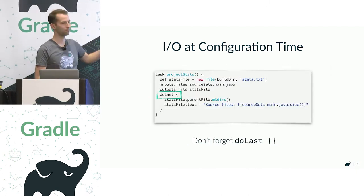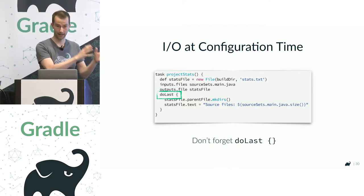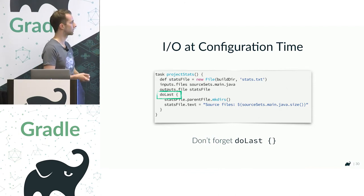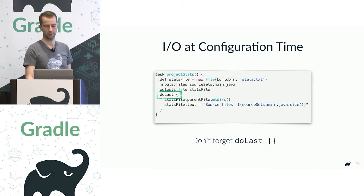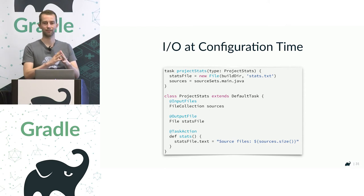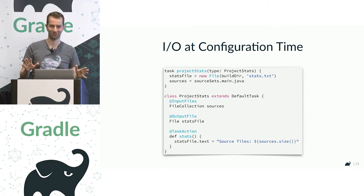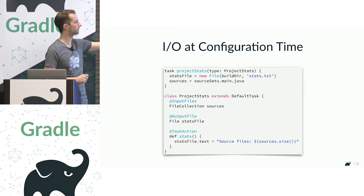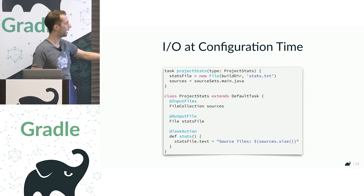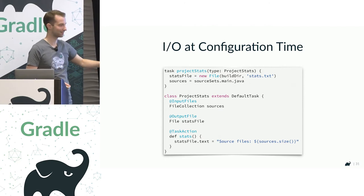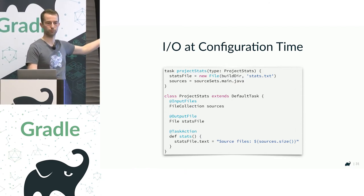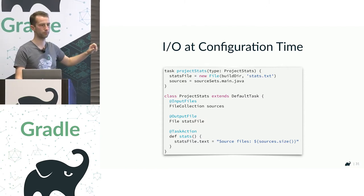The fix is to wrap the actual writing in a doLast block, telling Gradle this is the action of the task — only do this when the task is really executed — and declare the inputs as main Java sources and the output as the stats file. Ideally, write this as a custom task class because it makes the separation much clearer with less spaghetti code. A custom task class declares its inputs and outputs explicitly, and in your build script you simply instantiate it with the appropriate source and output file paths.